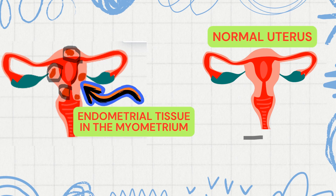On the right side we have a normal uterus, and on the left we have the uterus with adenomyosis.